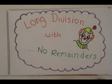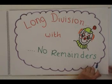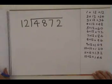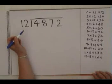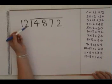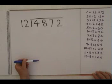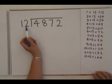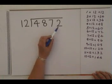Long division with no remainders. In this example we are going to use long division working down the page to find out how many times 12 fits into 4872.